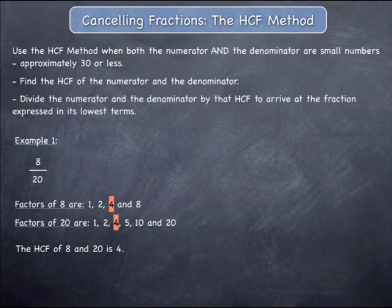Once you have found the highest common factor, divide both the numerator and the denominator by this highest common factor. The result of this division will give you the fraction expressed in its lowest terms. 8 over 20 is 2 over 5 when expressed in its lowest terms.